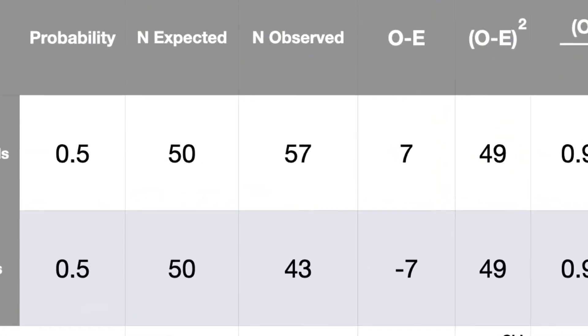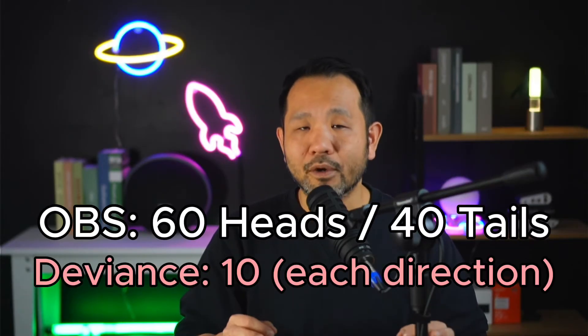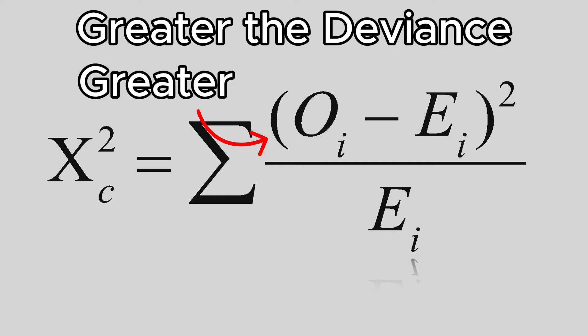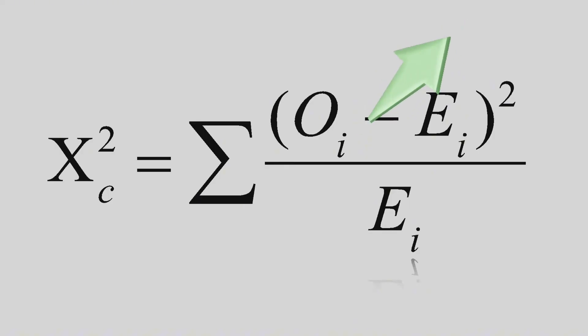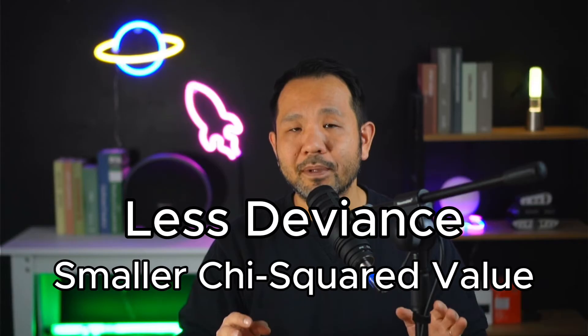So far that's just middle school math, but what does this actually mean? Let's think about how this chi-squared value would change if the deviance were greater or lower. A greater deviance would be something like 60 and 40 or 65 and 35; less deviance would be like 51 and 49. The greater the deviance, the greater the value of observed minus expected — and since we square it, the sign doesn't matter. The farther off your observed value is from expected, the bigger the chi-squared becomes. Conversely, the closer we are to the expected values, the lower the chi-squared value will be.